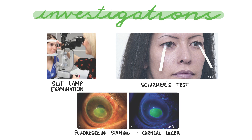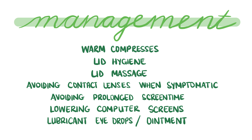If the patient has no red flags for serious eye pathologies and no signs of systemic conditions causing the dry eyes, then the patient does not need to be referred to secondary care and can be managed in the community. The most important step of management is education, because dry eye syndrome is a chronic condition and there's no cure. Lifestyle measures can help symptoms — for example warm compresses, lid hygiene, lid massage, avoiding contact lens use when symptomatic, avoiding prolonged screen time or dry environments, and lowering computer screens to below eye level to decrease the lid aperture and reduce evaporation. If possible, consider alternatives to medications that can worsen dry eye syndrome.